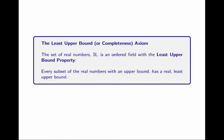And now we've come to our axiom, which we'll call the least upper bound axiom, or completeness axiom. The set of real numbers is an ordered field with the least upper bound property, which is: every subset of real numbers with an upper bound has a real least upper bound.